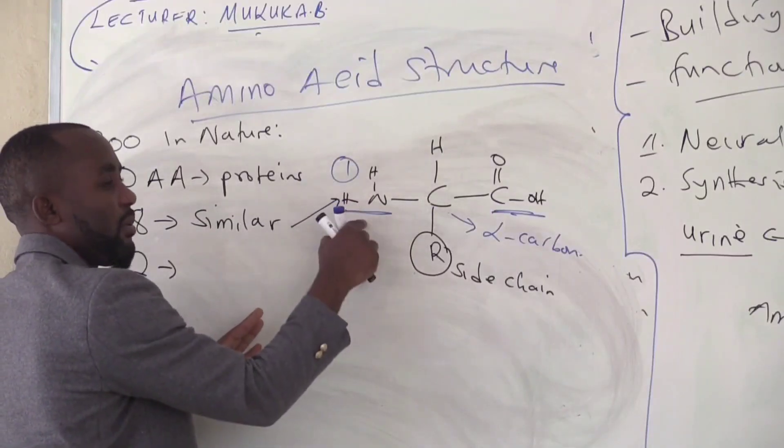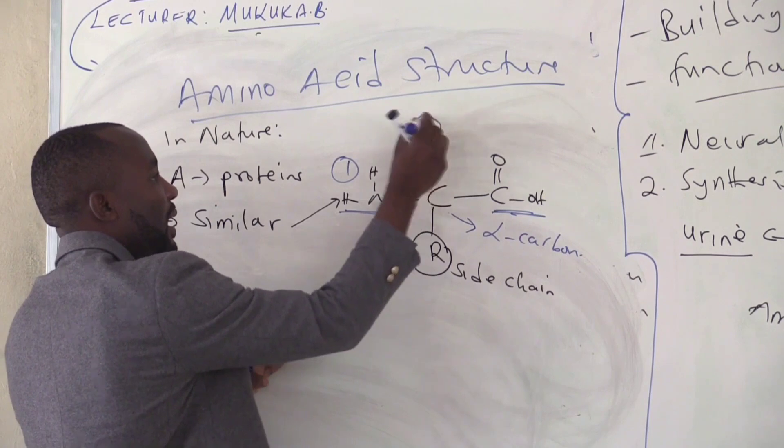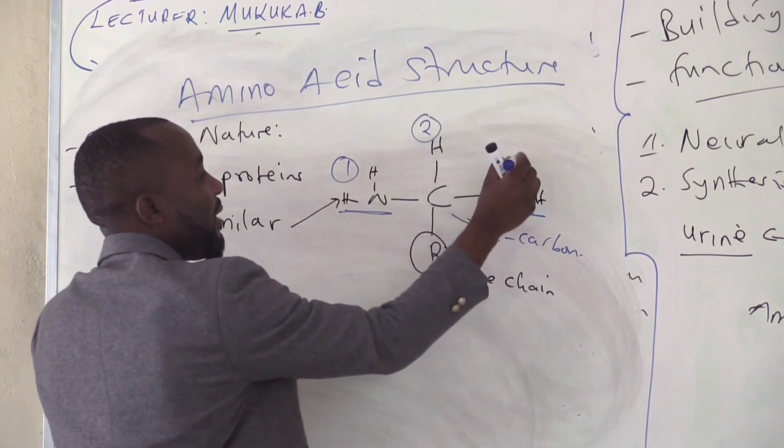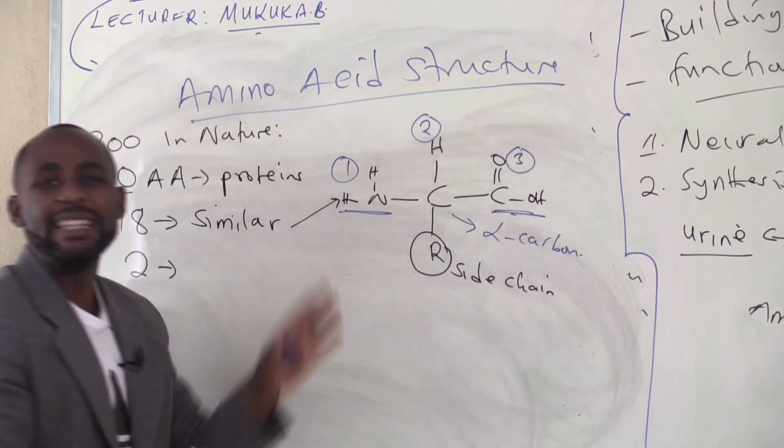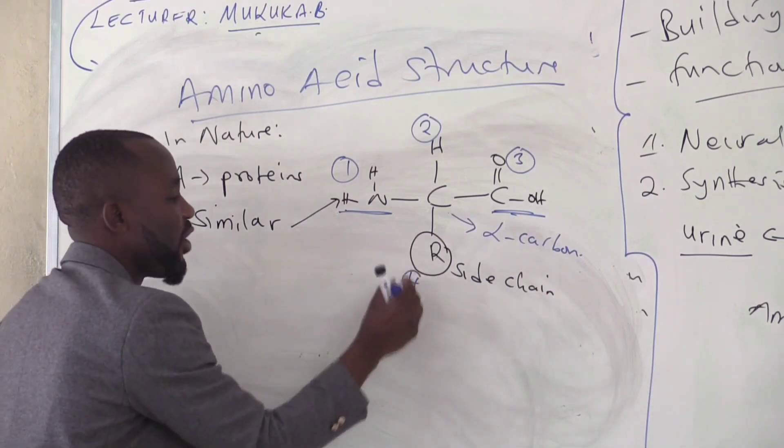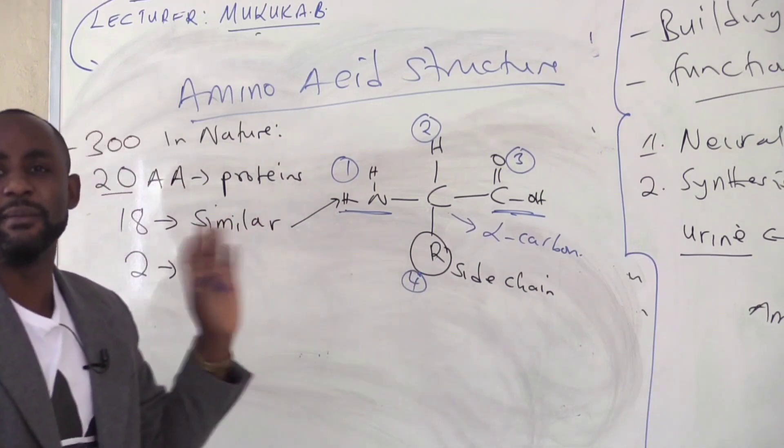One, amino group. Number two, hydrogen atom. Number three, carboxyl. And the fourth group, which we are calling the side chain, is what makes them different.